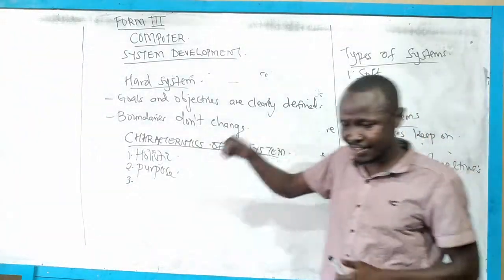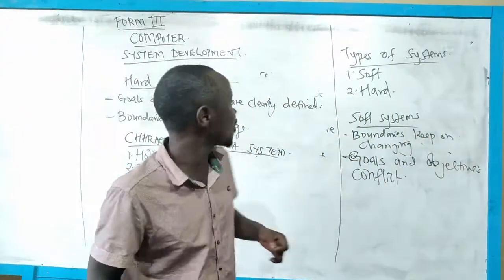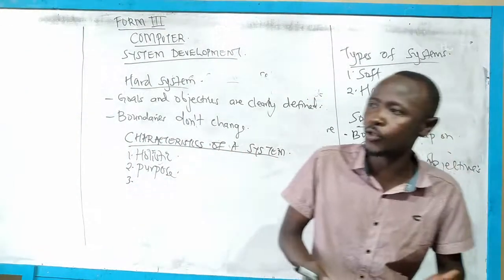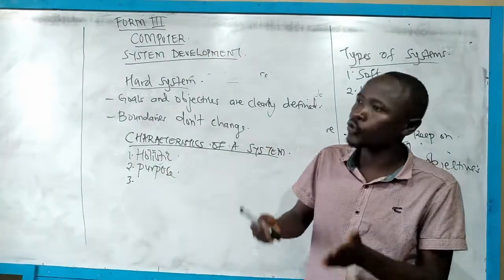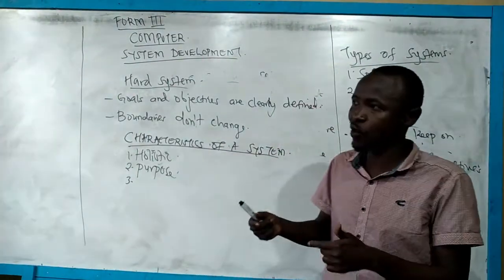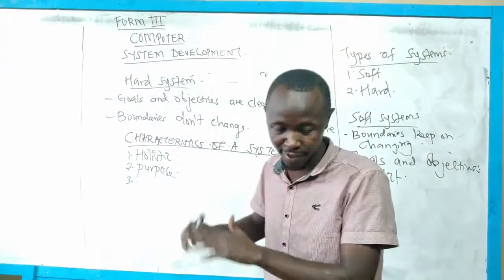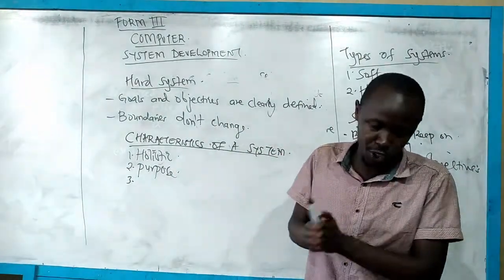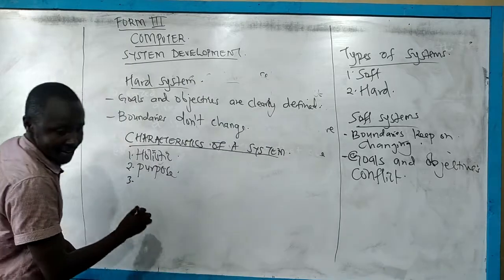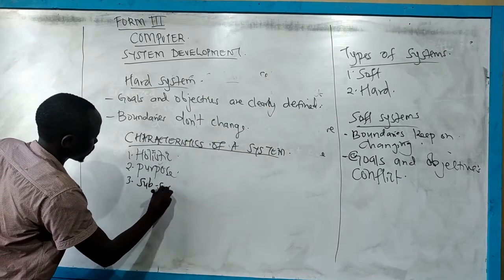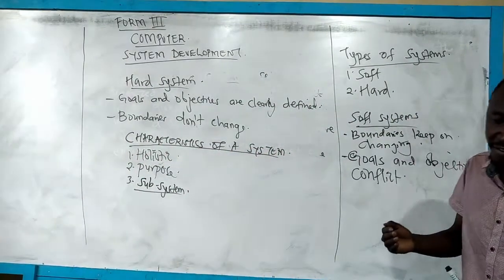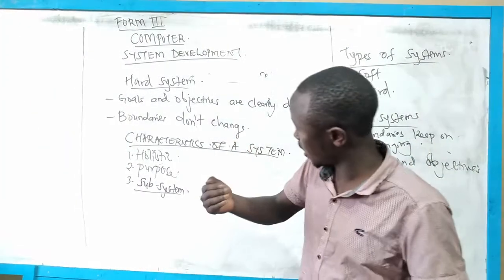We have purpose. Purpose means the system should have a specific objective — what is it meant to achieve? For example, the transport system is meant to take someone, for example, to travel from here to Nairobi. The purpose of the transport system is to enable us to reach where we want to go. Another characteristic is subsystems — very much related to subprograms in programming.